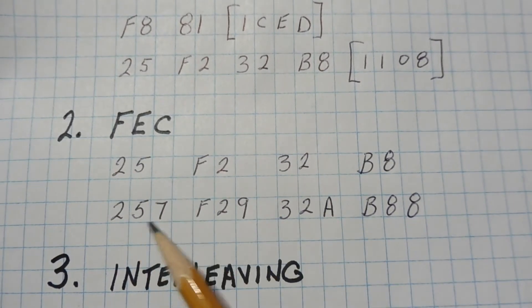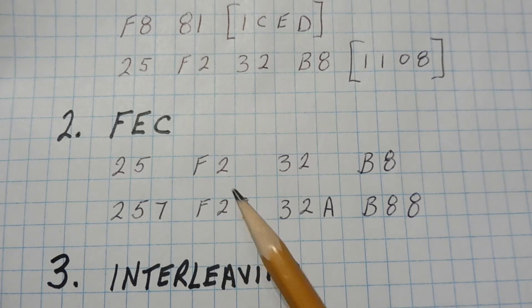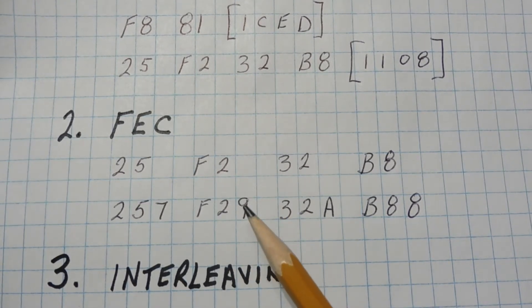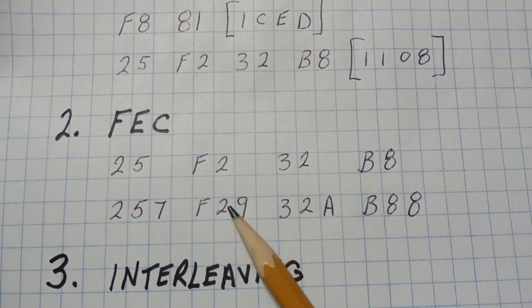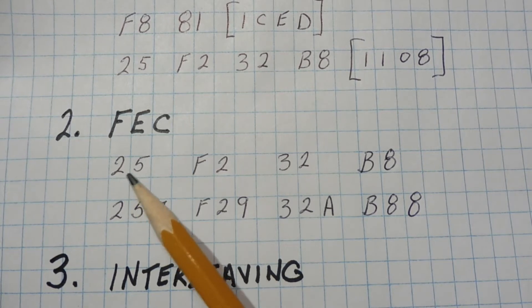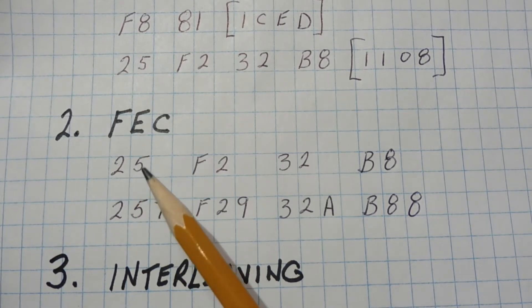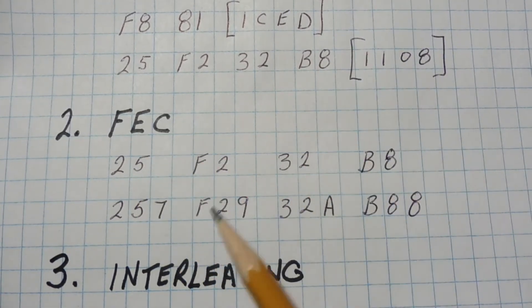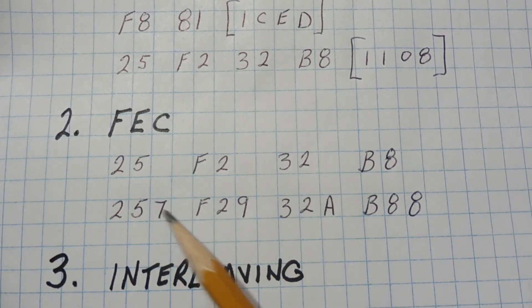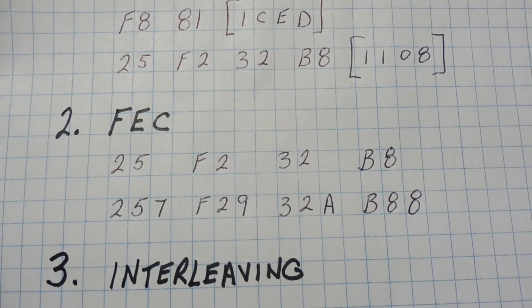So 2-5 would become 2-5-7, F2 would become F2-9. So we add on these extra four bits onto each byte before they're sent. And at the receiving end, we actually could calculate if there's an error in the data, and if there's single-bit errors, we could actually correct them without asking for a retry. So in this video, we're going to look how we could encode or calculate these four extra bits for each byte using a Hamming matrix.